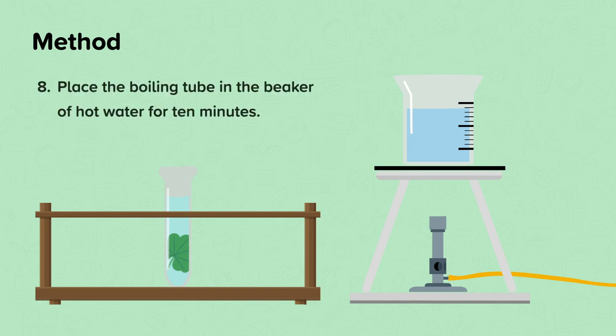Step eight, place the boiling tube in the beaker of hot water for 10 minutes. You'll notice that the ethanol will start to boil. Chlorophyll is soluble in ethanol, so as the ethanol starts to boil, it will allow it to remove the chlorophyll from the leaf more quickly. After 10 minutes, the leaf will be almost white and the ethanol will have turned green from all the chlorophyll.